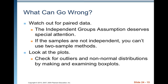What can go wrong? Watch out for paired data — the independent groups assumption deserves special attention. If the data are paired, we need to use the methods in Chapter 25. If the samples are not independent, you can't use two-sample methods. Also, look at the plots: check for outliers and non-normal distributions by examining box plots, histograms, stem plots, or normal probability plots.